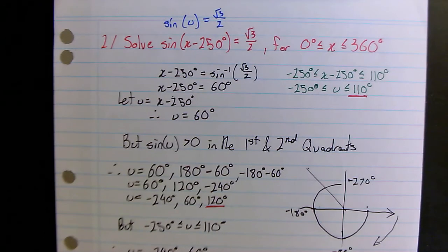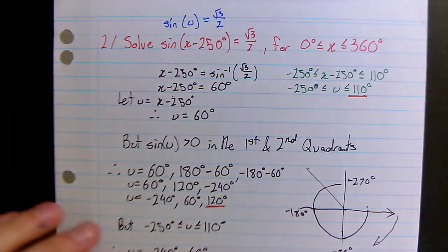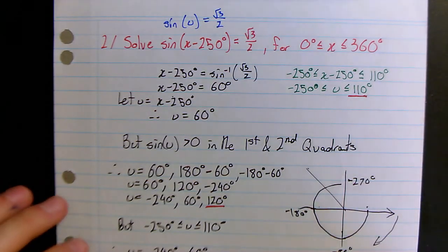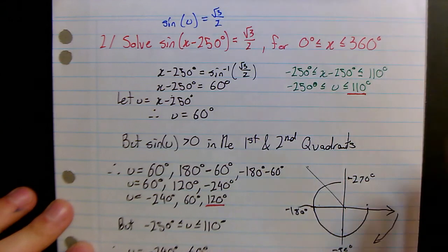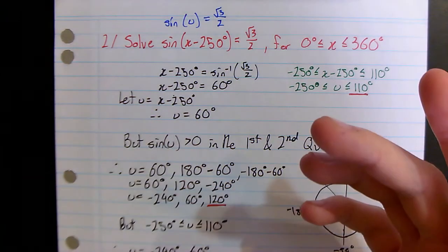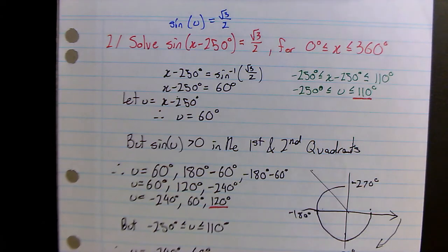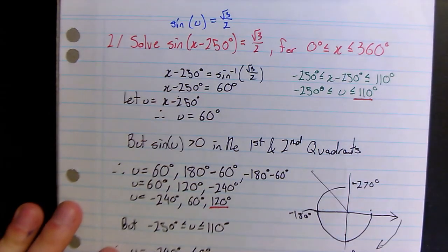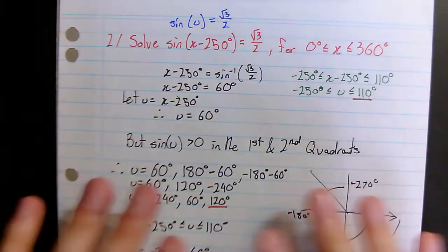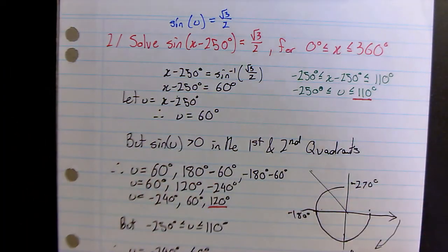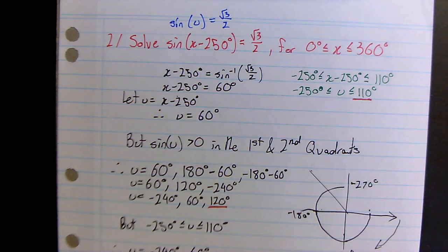So that covers the basics of how to change the domain — those are the only two examples for this lesson. In the next and final part of this three-part series on solving trig equations, I'll be looking at harder examples, mixing in trigonometric identities and factorization. I highly suggest you take a look at that. Enjoy!